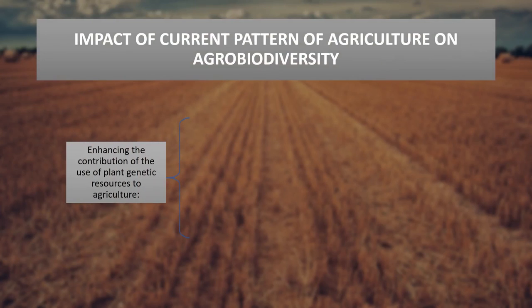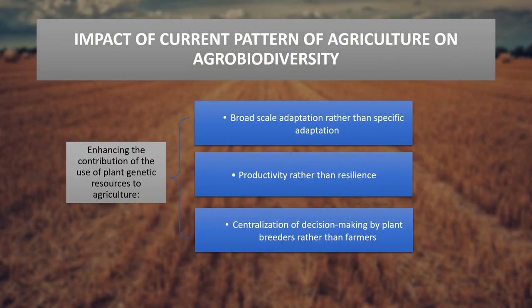When we talk about the impact of current patterns of agriculture on biodiversity, over the last 50 to 60 years agriculture has played an important role in economies of different countries, effectively increasing production to meet the demands of a growing population. Much of this increase has come from intensification of production systems. The adoption of improved crop varieties developed and disseminated by plant breeding programs has also played an important role in managing food security.